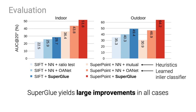We evaluate relative pose estimation with different local features: SIFT in blue and SuperPoint in red. SuperGlue consistently yields large improvements over classical heuristics and recent deep networks for both indoor and outdoor environments.